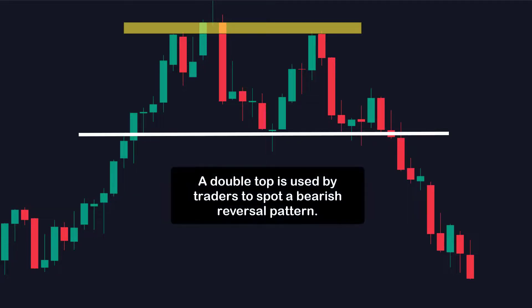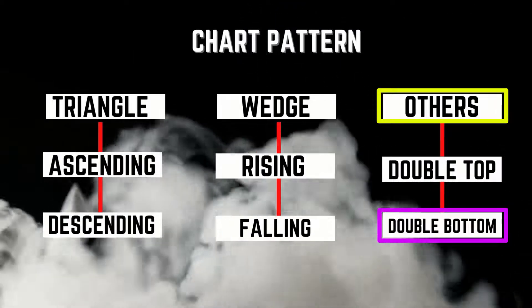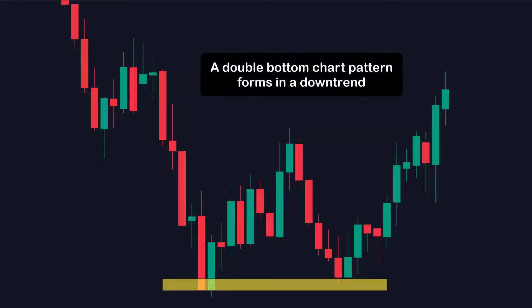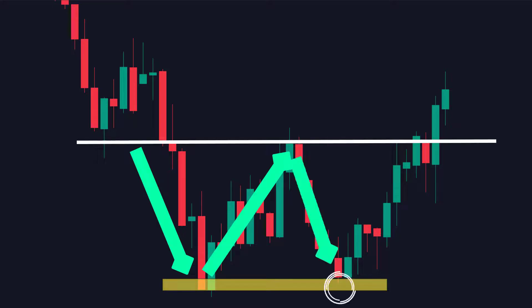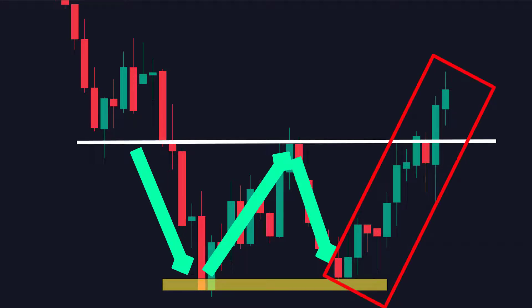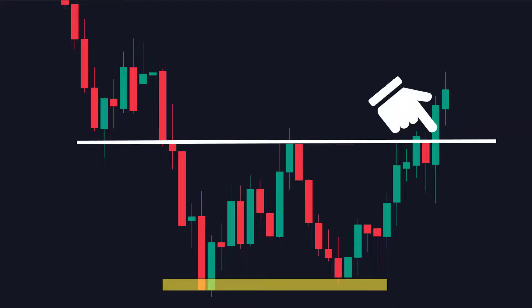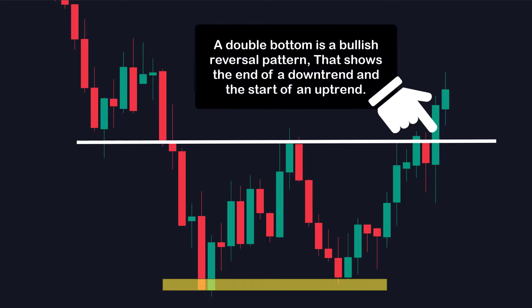A double top is used by traders to spot a bearish reversal pattern. Now the double bottom — a double bottom chart pattern forms in a downtrend. As the price came down, it hit and reversed forming the neckline. As it came back to this level again, notice the bullish presence that entered the market, and the trend reversed starting an upward movement which finally broke through the neckline. More aggressive traders will take a breakout entry long at this point. A double bottom is a bullish reversal pattern, showing the end of a downtrend and the start of an uptrend.